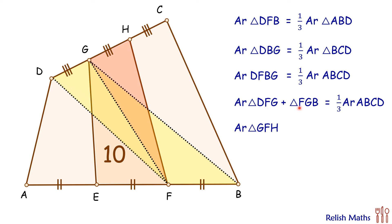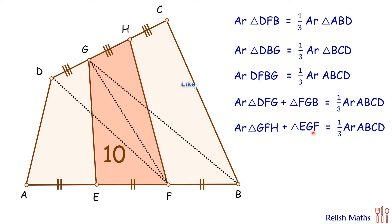Similarly for triangle FGB — if we take triangle EGF, they have the same base and a common vertex, so we can replace FGB with EGF. These two areas together equal one third of ABCD. These two areas together form the region given in the question, so we replace it with 10. Therefore, 10 equals one third the area of ABCD.